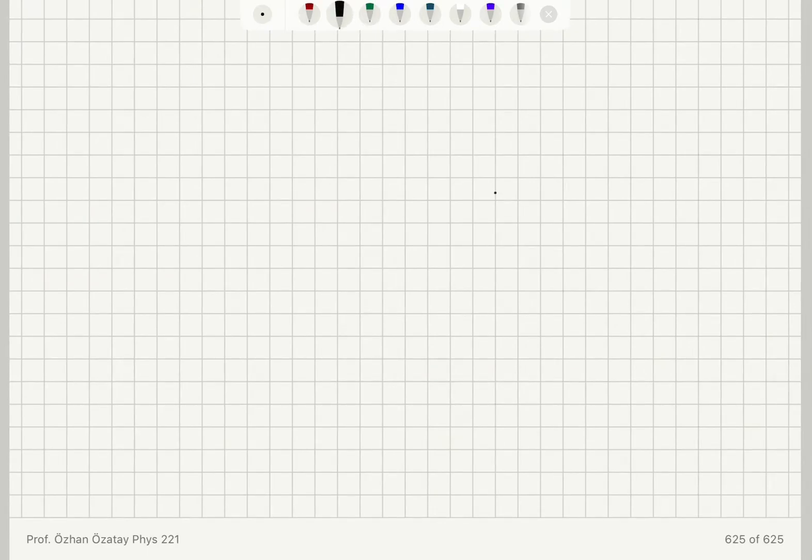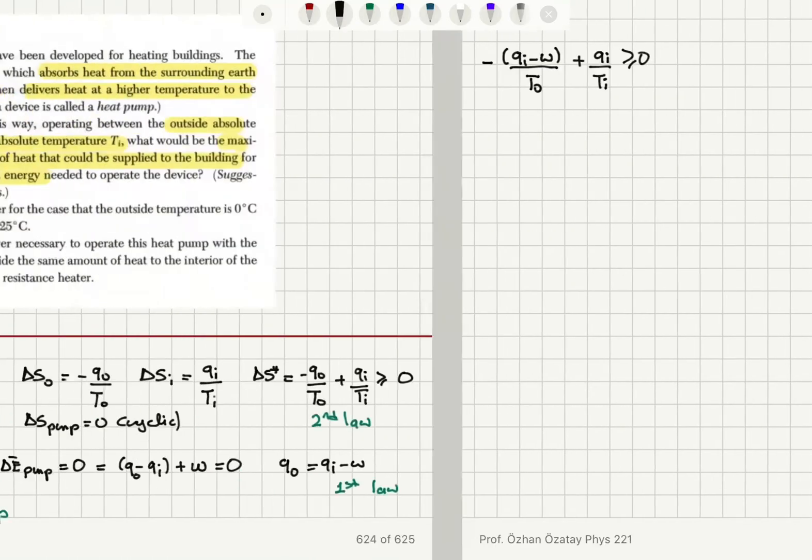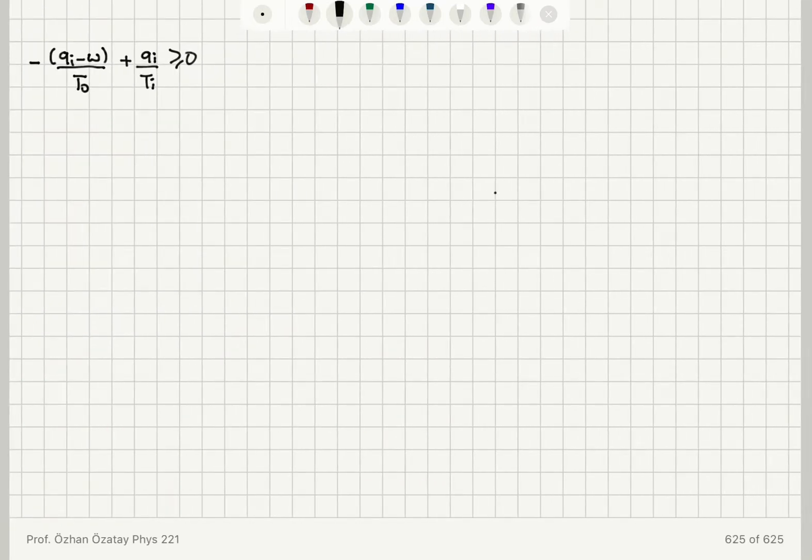Minus Q out over T out becomes minus Q I minus W over T out plus Q I over T I, which must be greater or equal to zero. Multiplying this by T in T out, I obtain Q in times T out minus T in, but T out T in will cancel.